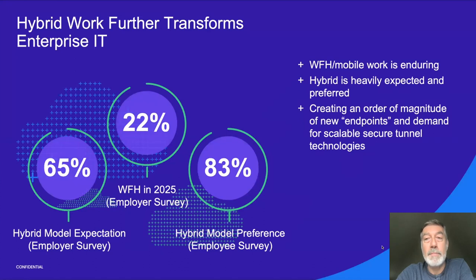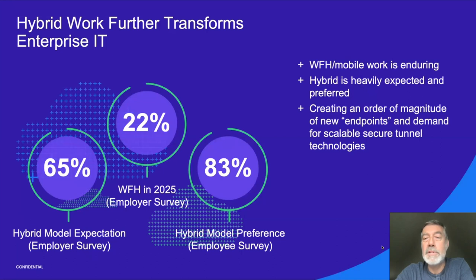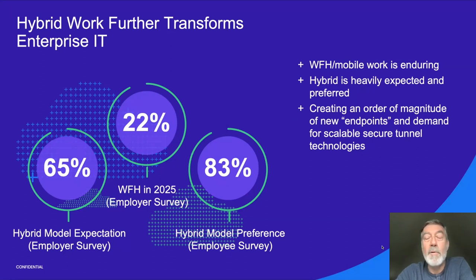Before the pandemic, about 4% of all employees worked from home. A Gallup poll shows that 22% of employees will remain working from home in 2025 — a huge change. An Accenture Tanium poll shows the sentiment between employers and employees about some hybrid form of work, where hybrid means being in the office less than 80% of the time. Hybrid is heavily preferred and expected. What this does to the enterprise network architecture is it creates an order of magnitude more network endpoints, meaning the old full mesh design really can't scale.